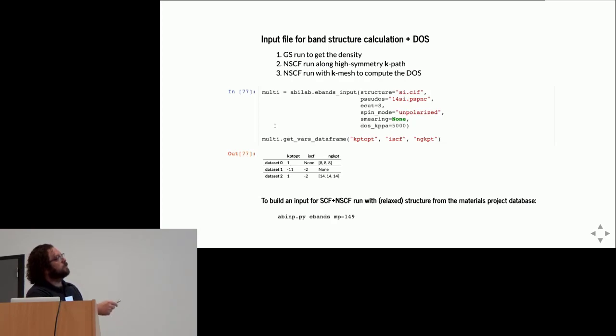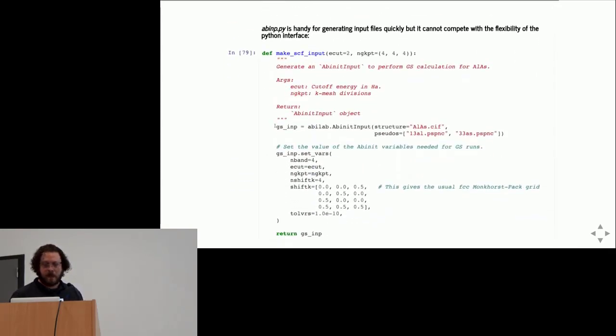If you don't want to write Python code and you prefer command-line interfaces, you can use abinp bands. You pass either a file with the structure or a Materials Project identifier, and you get a template for band structure calculations. Obviously, this kind of approach is handy but cannot compete with the flexibility of the Python interface.